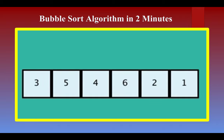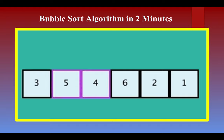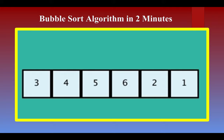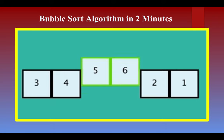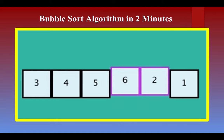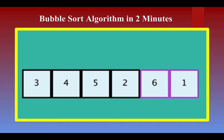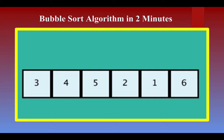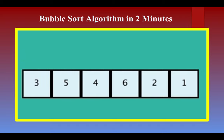We take the first and second numbers — 3 and 5 — they are in the correct order for ascending, so we leave them alone. Next we take 5 and 4 and swap them. Next we take 5 and 6 — they are in the correct order, so we keep it. Next, 6 and 2 — we swap, because we want ascending order. Then 6 and 1 — we swap, because we want ascending order. The highest number travels to the end.